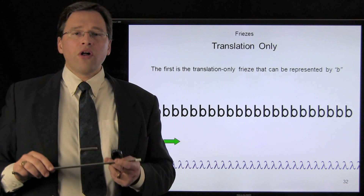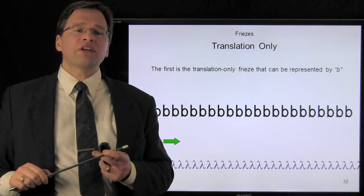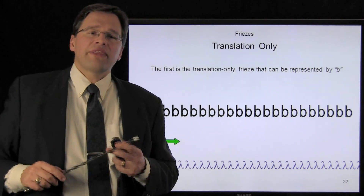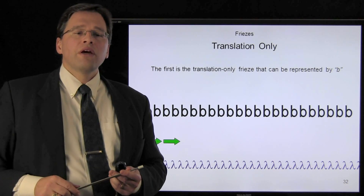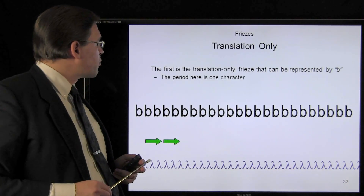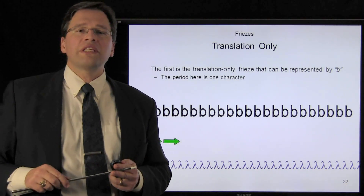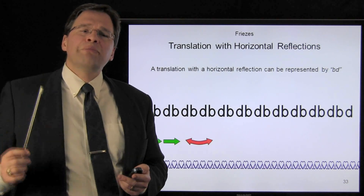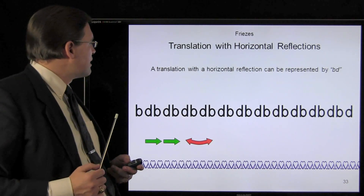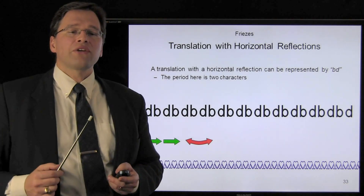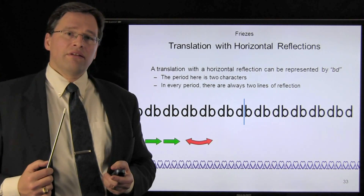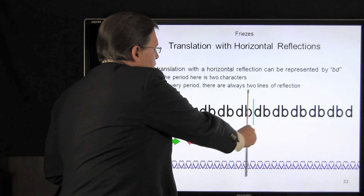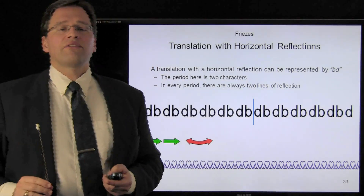We're going to look at all possible combinations and describe each using letters of the Latin alphabet. If we want to consider the frieze that is translation only, we're going to use the letter B. Here the period is one character, and if you look closely you will see that there are no reflections or rotations possible. If we now take the letters B and D and repeat these, we have a period of two characters, and we see that we can reflect this horizontally. In fact, within every period you're guaranteed that there are always two lines of reflection.